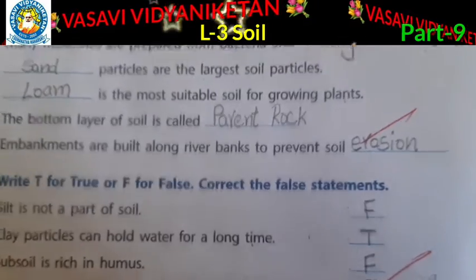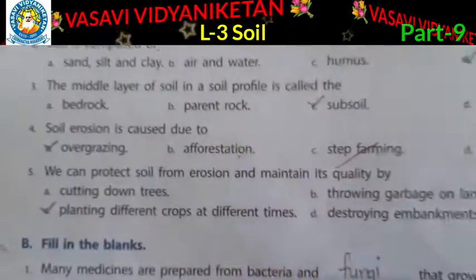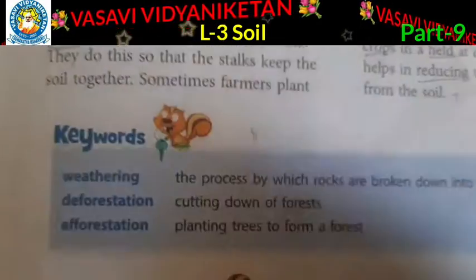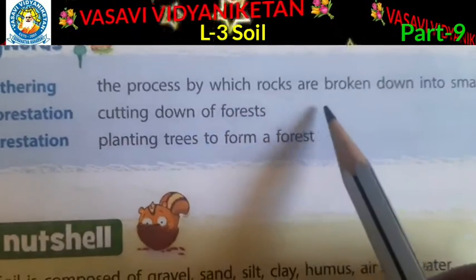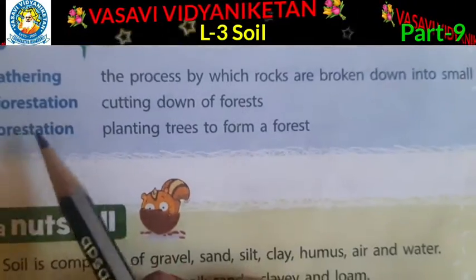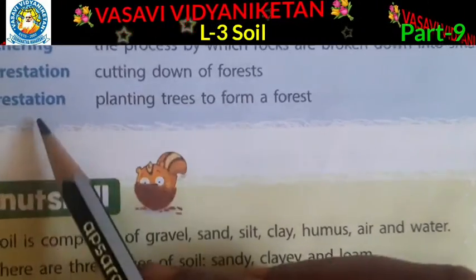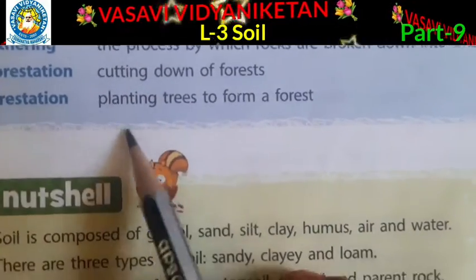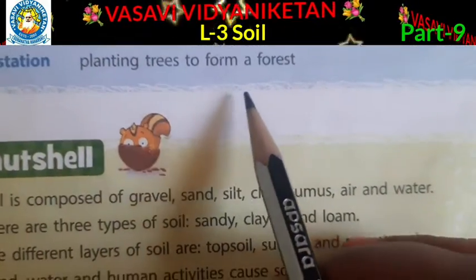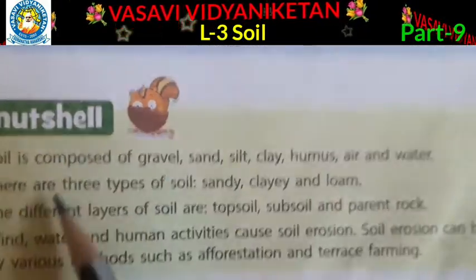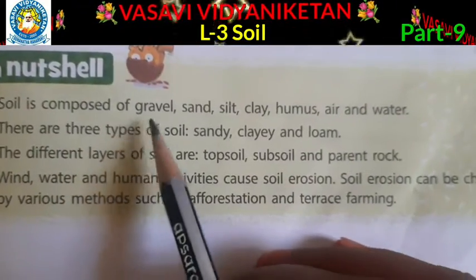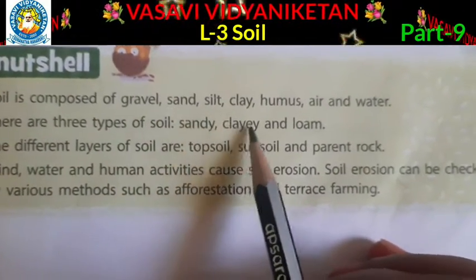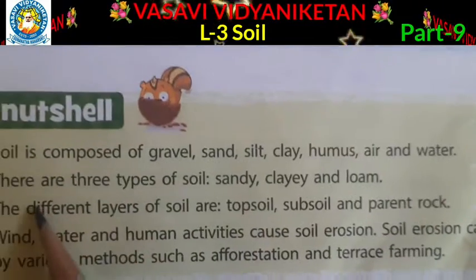So in the previous video we learnt about keywords. Weathering: the process by which rocks are broken down into small pieces. Deforestation: cutting down a forest. Afforestation: planting trees to form a forest. And in a nutshell, soil is composed of gravel, sand, silt, clay, humus, air and water.